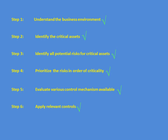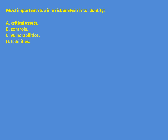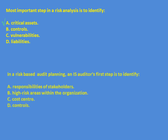Question: The most important step in a risk analysis is to identify — options are critical assets, controls, vulnerabilities, and liabilities. From the steps discussed, the first is business environment and the second is critical assets. Since business environment is not an available option, the answer is to identify the critical assets. Once critical assets are identified, the next steps cover risks, controls, and so on.